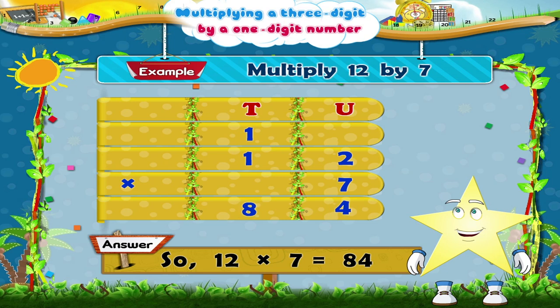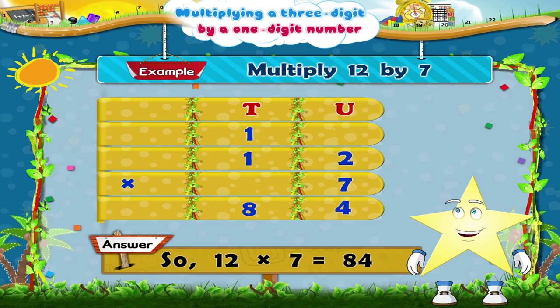Starry, that was multiplying a two-digit number by a one-digit number by carrying over to the tens place. Now let us see how to multiply a three-digit number by a one-digit number, again by carrying over to the tens place.